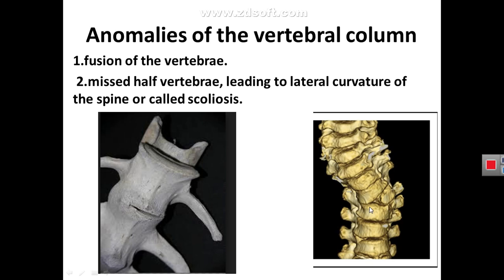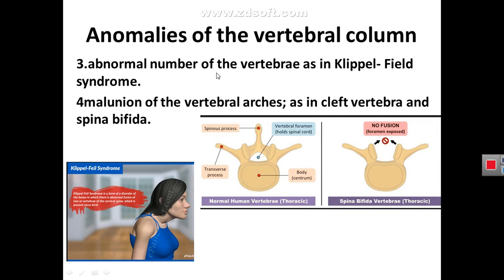Anomalies of the vertebra include fusion of the vertebral bodies, or a half vertebra, which causes deviation of the vertebral column — a condition called scoliosis. There may also be an abnormal number of vertebrae, as in Klippel-Feil syndrome, or absence of the vertebral arch, called spina bifida, which will be considered further with the embryology of the nervous system. Thank you very much.